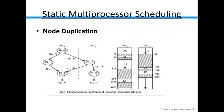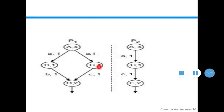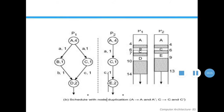To address this, we duplicate node A in processor P2, and also duplicate node C in processor P1 — because C was causing an 8 clock cycle inter-process communication delay. Now on P1, we first execute A taking four clock cycles, then one clock cycle delay, then B for one clock cycle, then one more delay, and then D takes two clock cycles, starting at 8 and ending at 10.